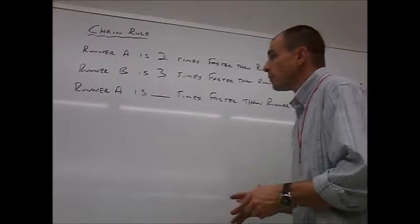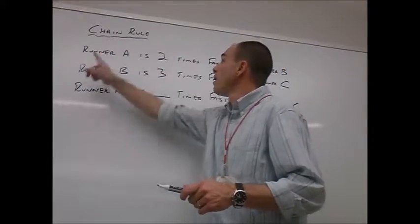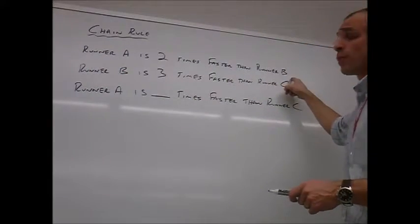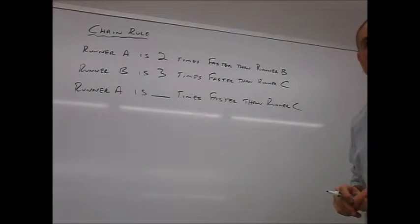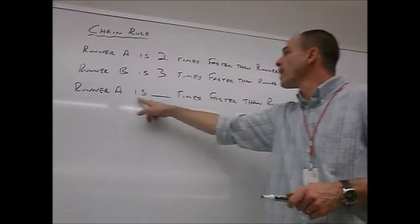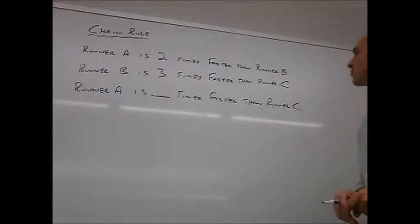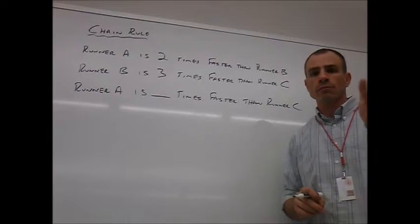We start by asking you this question. Fill in the blank question. Runner A is twice as fast as runner B. Runner B is three times as fast as runner C. Fill in the blank. Runner A is how many times faster than runner C?